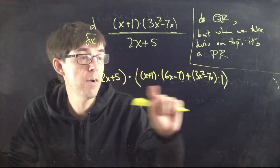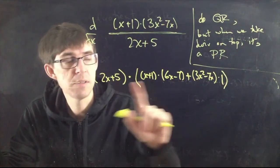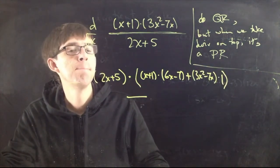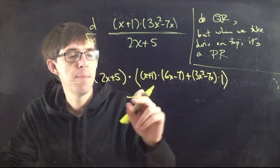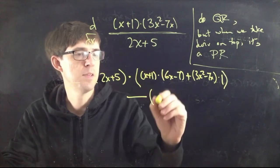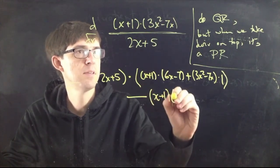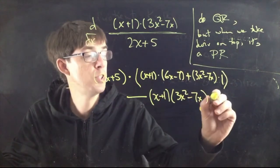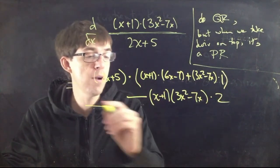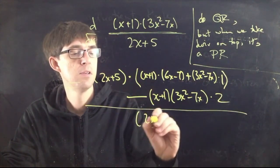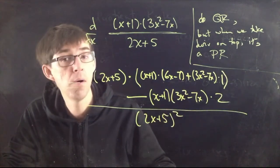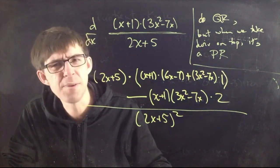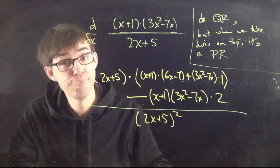Remember, that whole product-rule expression is only the first part of the quotient rule numerator — this is g times f′. Then minus the top as written (x+1)(3x²−7x) times the derivative of the bottom, which is 2. All of this is the numerator of a big fraction whose denominator is (2x+5)². That is the answer for the derivative of that expression. Just keep it all straight — you don't need to simplify further.